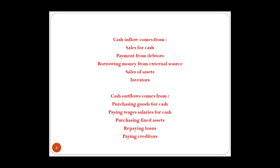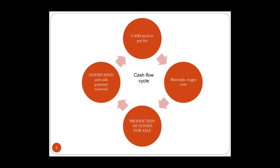Cash outflows are the opposite — money going out of the business. This includes purchasing goods for cash, paying wages and salaries, purchasing fixed assets like machines and equipment, repaying bank loans, and paying creditors. Creditors, or trade payables, are suppliers from whom you buy goods and pay later. Sometimes cash is used immediately and sometimes goods or sales are on credit, so a business will have both creditors and debtors.